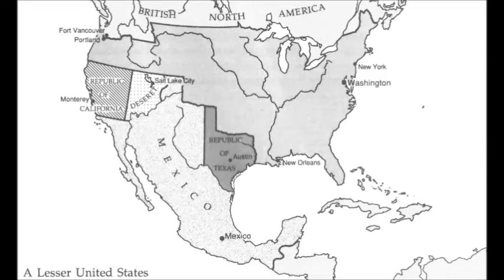For those who don't know, Meinig is an award-winning geographer and historian. He is currently a professor emeritus at Syracuse University. 'A Lesser United States' is meant to show what America might have looked like if the Mexican-American War never happened and the United States never got its southwest.